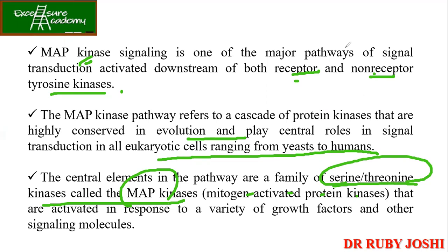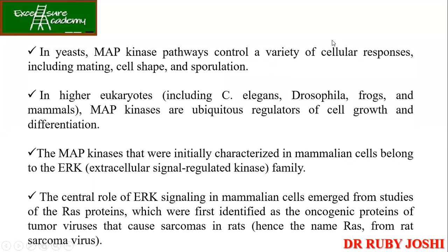These serine-threonine kinases show activity in response to a variety of growth factors and other signaling molecules. In yeast, MAP kinases play an important role in controlling a variety of cell responses including mating, cell shape, and sporulation. In eukaryotes like C. elegans, Drosophila, frogs, and mammals, they are ubiquitous regulators of cell growth and differentiation — MAP kinase is important everywhere.